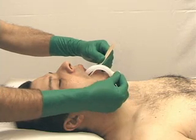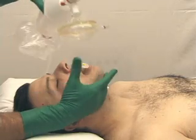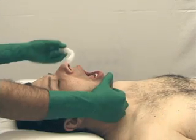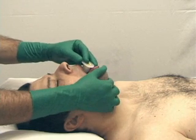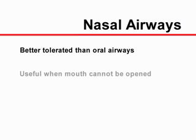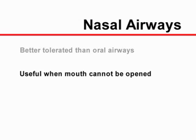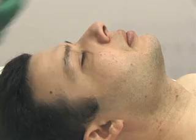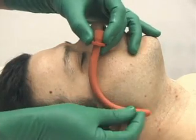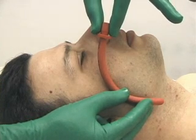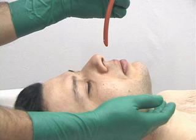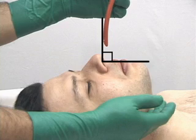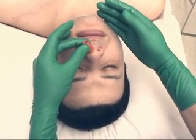An oropharyngeal airway can be inserted by depressing the tongue with a tongue blade and advancing the airway towards the base of the tongue. Alternatively, the airway can be inserted upside down and then rotated 180 degrees as it is being advanced posteriorly. In general, nasopharyngeal airways are better tolerated than oral airways when airway reflexes are present, and are particularly useful when the mouth cannot be opened. The simplest method of estimating their appropriate length is by correlating with the external anatomy of the face and neck, considering the patient's height. Nasopharyngeal airways should be thoroughly lubricated and advanced perpendicular to the face and parallel to the floor of the nose, not towards the roof of the nose.